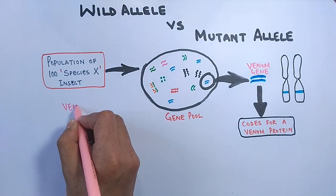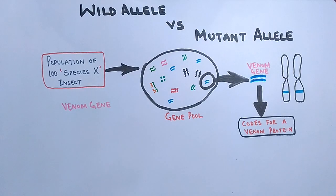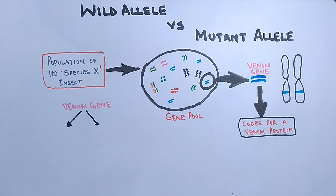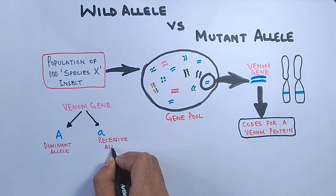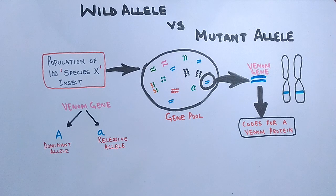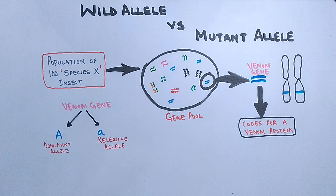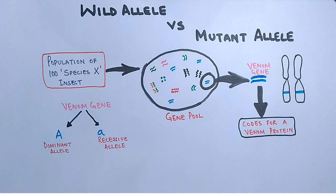A gene always has two variant forms called alleles, so we can say this venom gene has two alleles: one is the dominant allele, denoted by capital 'A', and one is the recessive allele, denoted by small 'a'. It must be noted that if the population does not have any mutated allele for that venom gene, the alleles are represented simply as capital 'A' and small 'a' without any symbols.